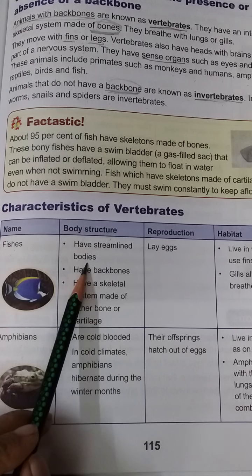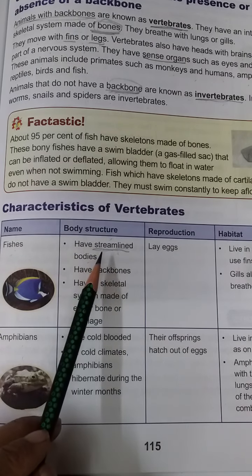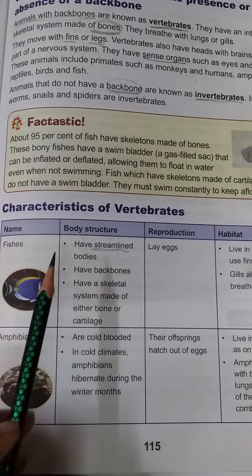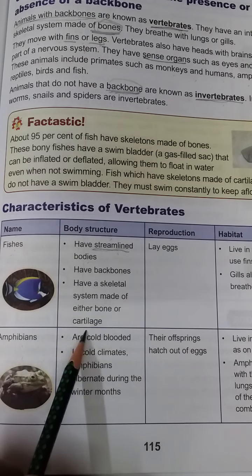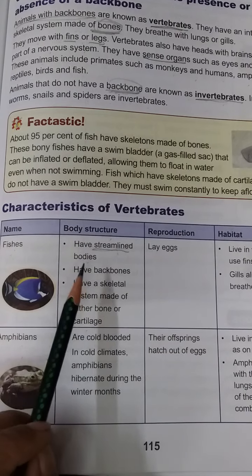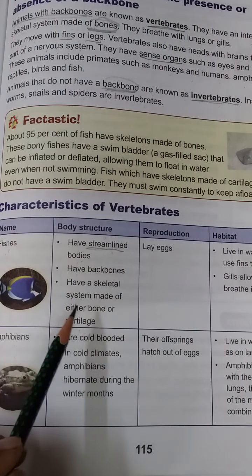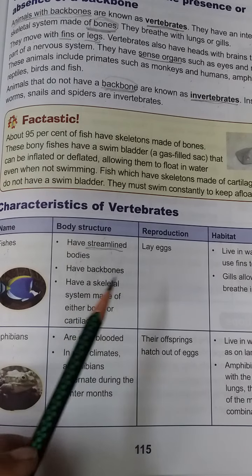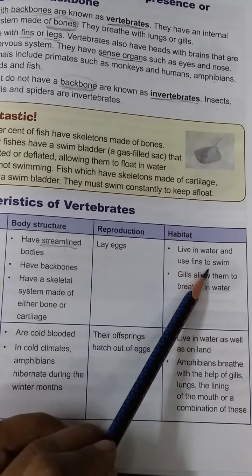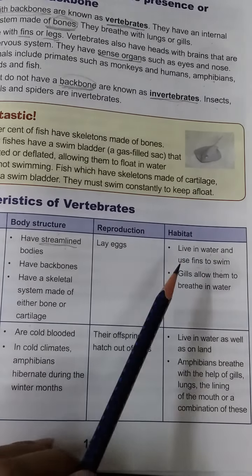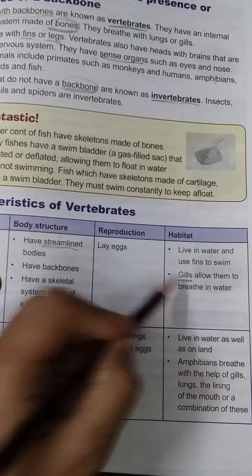Fishes have streamlined bodies, backbones, and a skeletal system made of bone or cartilage. For reproduction, they lay eggs. Their habitat: they live in water and use fins to swim. Gills allow them to breathe in water.